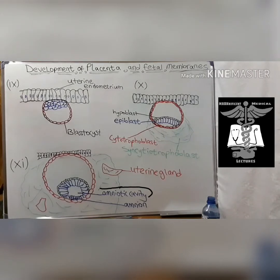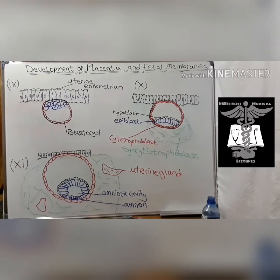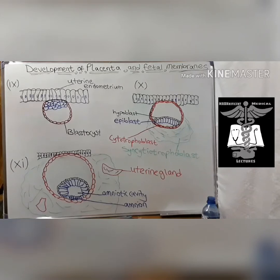The floor of the amniotic cavity is formed by the epiblastic cells while its roof is formed by the amnioblastic cells. The amnion continues to enlarge until it fills the chorionic sac. Amniotic fluid, produced by amnioblasts, contains water and organic and inorganic substances.